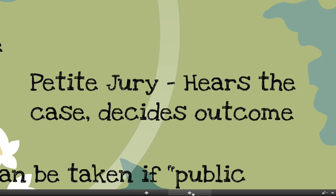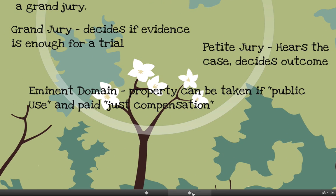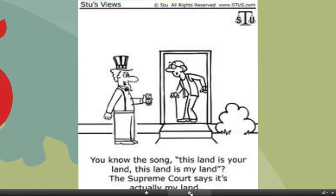There's also another part of the Fifth Amendment: the government can actually take your property without your consent if it's put to what's called public use, and you are paid just compensation for that property. This is called eminent domain, and it allows the government to take private property and make it public property. Eminent domain is a very controversial part of the Fifth Amendment. There's a cartoon here referencing the song 'This Land Is Your Land,' suggesting that actually the Supreme Court says the government can take your property.